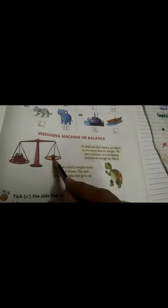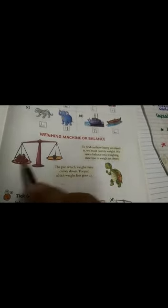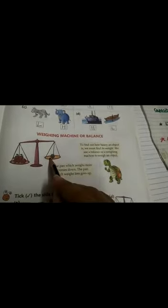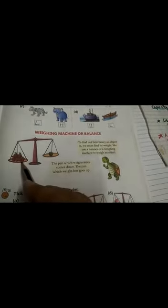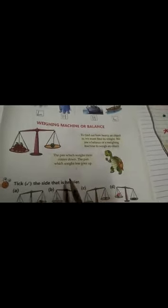You all must have seen this. Yes, when you go to the shop, the shopkeeper measures things and gives them. This is called as the weighing balance in which the things are kept on one side and the side which goes down is heavier. The pan which goes down becomes heavier.